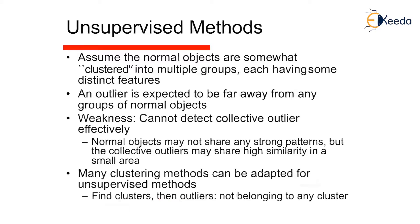Unsupervised method: normal objects are somewhat clustered into multiple groups, each having some distinct features. An outlier is expected to be far away from any group of normal objects. A weakness is that it cannot detect collective outliers effectively. Normal objects may not share any strong patterns, but collective outliers may share high similarity in a small area. Many clustering methods can be adapted for unsupervised outlier detection — finding clusters, and those not belonging to any cluster are called outliers.